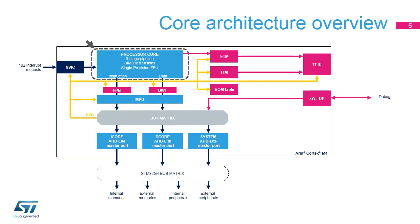The processor core implements a Harvard architecture because it supports concurrent instruction fetch and data load and store transactions. The instruction pipeline features three stages: fetch, decode, and execute. Conditional branch execution is accelerated by early fetching the target instruction.